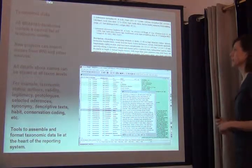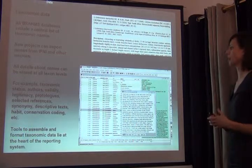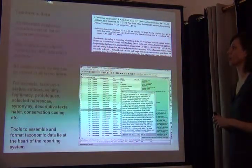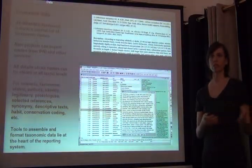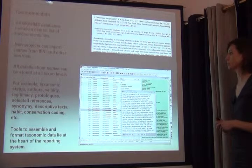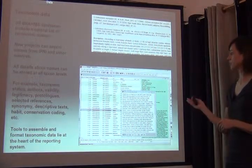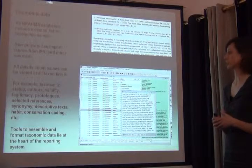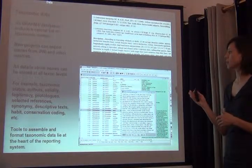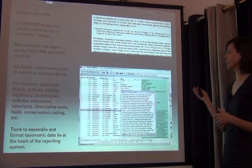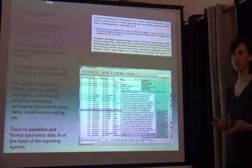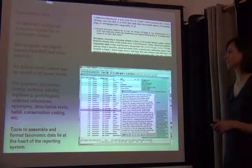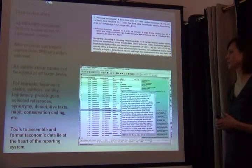The taxonomic dataset is the centralized backbone of a Brahms project. This allows for importing — so if you have a dataset from IPNI you could import that right into Brahms or from any other source. You can store information at all levels, including family and genus descriptions, protolog information, selected references, synonymy for a taxon, conservation coding — anything related to a specimen or species.